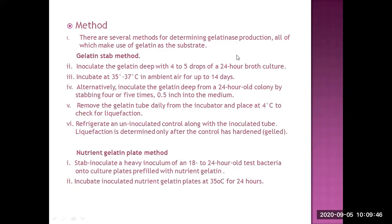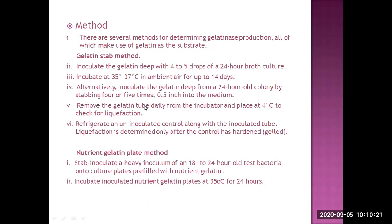The method used is the gelatin stab method. We prepare our media and use a 4-5 loop, 24-hour growth culture, which we stab into the gelatin. Incubation is at 30°C in ambient air for up to 14 days. We insert the inoculum approximately 0.5 inches into the medium.